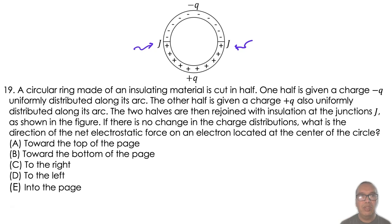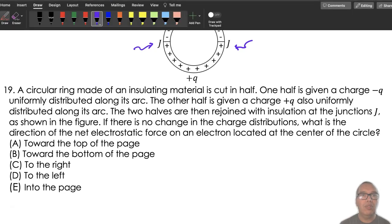If there is no change in the charge distributions, what is the direction of the net electrostatic force on an electron located at the center of the circle?